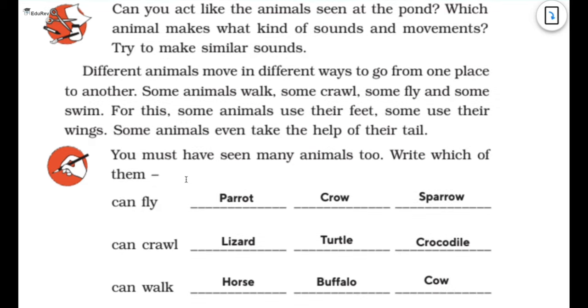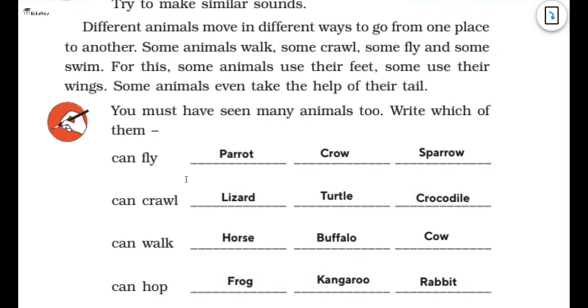Different animals move in different ways to go from one place to another. Some animals walk, some crawl, some fly, and some swim. For this some animals use their feet, some use their wings, some animals even take the help of their tail.